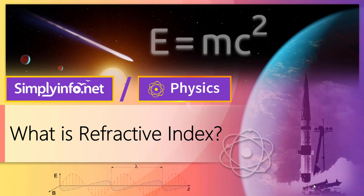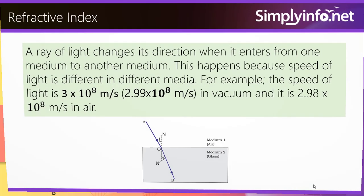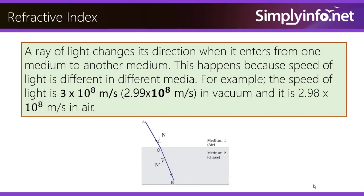What is refractive index? A ray of light changes its direction when it enters from one medium to another medium. This happens because the speed of light is different in different media. For example, the speed of light is 2.99 into 10 power 8 meter per second in vacuum, and it is 2.98 into 10 power 8 meter per second in air.